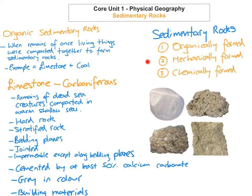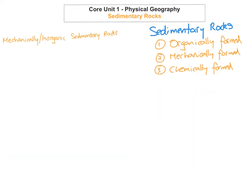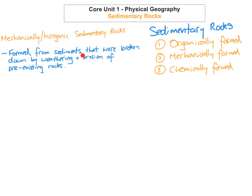The next type is mechanically formed sedimentary rocks, sometimes known as inorganic sedimentary rocks. These are formed from sediments broken down by weathering and erosion from pre-existing rocks. An example of an inorganic sedimentary rock is sandstone, which is the second most common type of rock in Ireland after limestone.